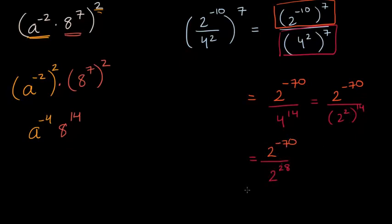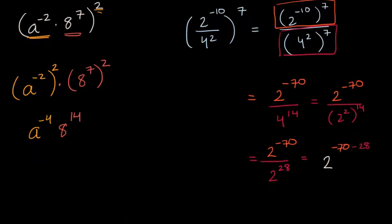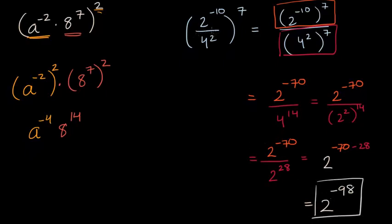Can I simplify this even more? Well, taking a quotient with the same base means I can subtract the exponents. So it's going to be two to the negative 70 minus twenty-eight power, which is two to the negative ninety-eighth power. And that's another way of viewing the same expression.